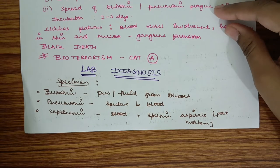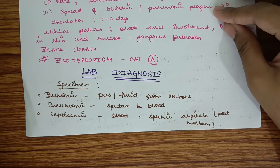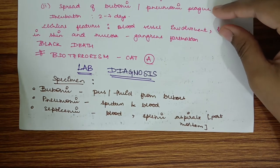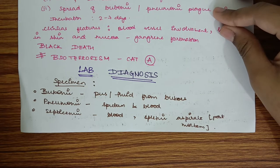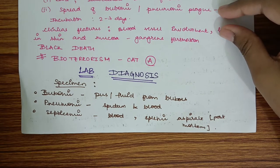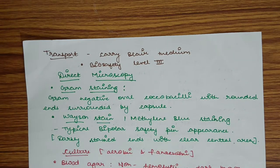Lab diagnosis: specimen collected from bubonic plague is pus or fluid from bubos; from pneumonic plague is sputum and blood; from septicemic plague is blood. In post-mortem cases, splenic aspirate may be collected. Transportation is by Cary Blair medium following biosafety level 3.